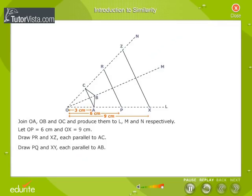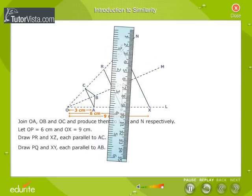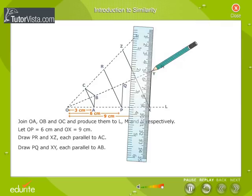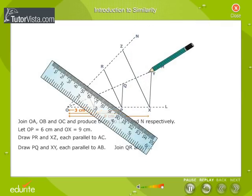Draw EQ and XY each parallel to AB. Join QR and YZ.